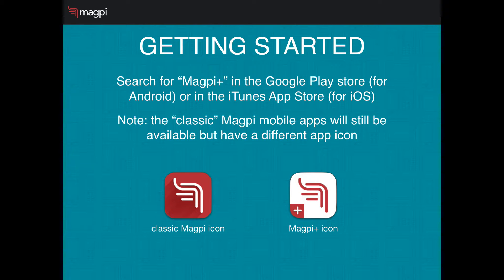If you want to get started with the Magpie mobile app, search for Magpie Plus in the Google Play Store for Android or the iTunes App Store for iOS. You'll notice that Magpie will still have our classic app available — that's with the dark red icon — but the Magpie Plus icon is white with the red symbol on it and the plus sign. In this video, we're talking about the new Magpie Plus app.